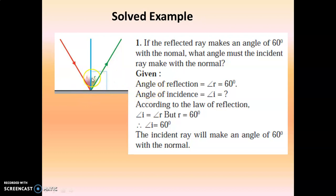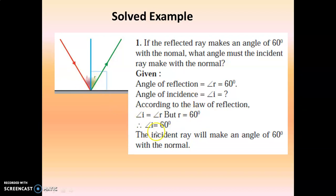What is given to us? The angle of reflection R is equal to 60 degrees, and we have to find the angle of incidence. According to the law of reflection, the angle of incidence and the angle of reflection are equal. So angle I is equal to angle R. The value of angle R is 60, which means angle of incidence is also 60 degrees. So the incident ray will make an angle of 60 degrees with the normal. This is based on the law of reflection of light.